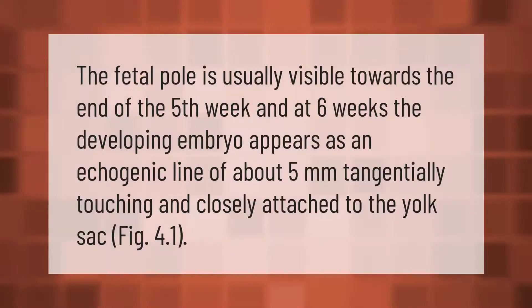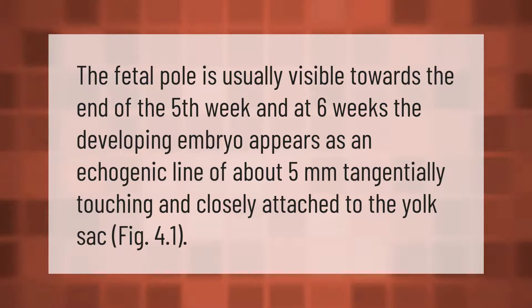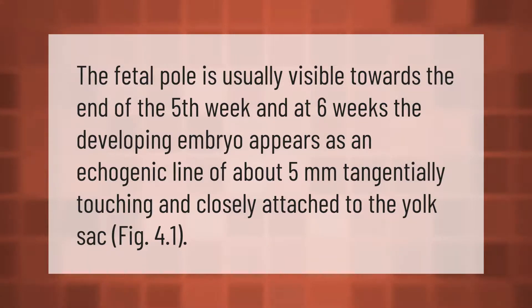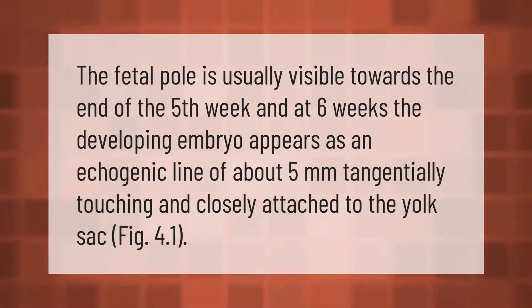The fetal pole is usually visible towards the end of the fifth week. At six weeks, the developing embryo appears as an echogenic line of about five millimeters, tangentially touching and closely attached to the yolk sac (Fig. 4.1).